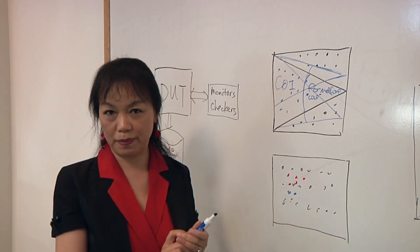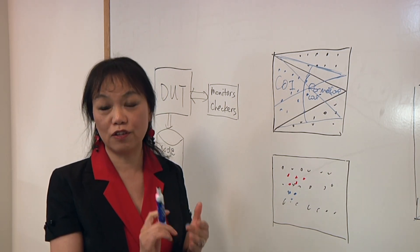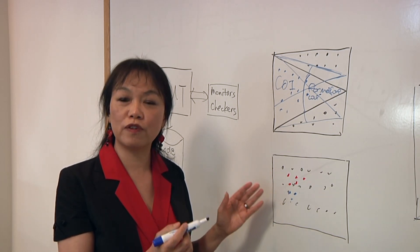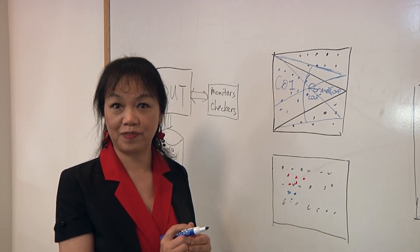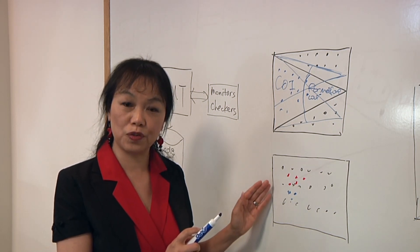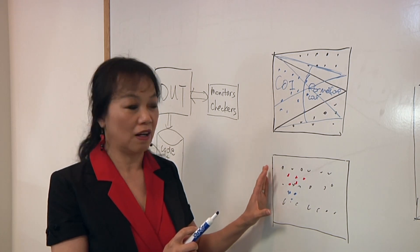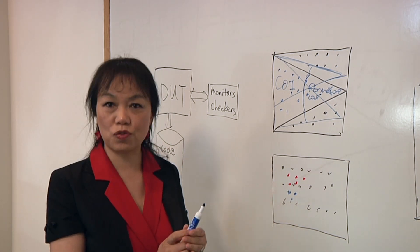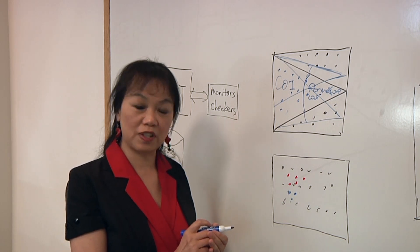So one of the things you really have to pay attention, especially in formal verification, is that you don't want to over-constrain your environment. So to do that, we have a formal analysis to tell you which part of your design are actually unreachable because of constraints. So we do that part of the coverage as well.